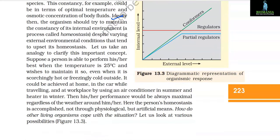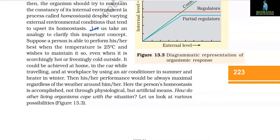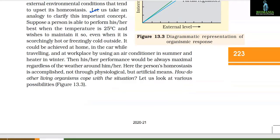Despite varying external environmental conditions that tend to upset homeostasis, consider this analogy: suppose a person performs best when the temperature is 25°C and wishes to maintain this even when it is scorchingly hot or freezing cold outside. It could be achieved at home, in the car, while traveling, and at the workplace by using an air conditioner in summer and a heater in winter. Then their performance would always be maximal regardless of the weather outside.